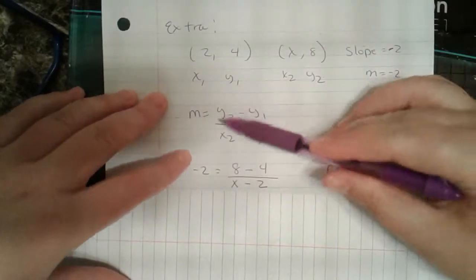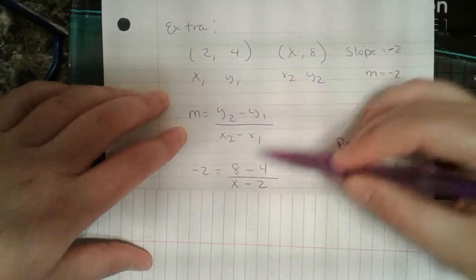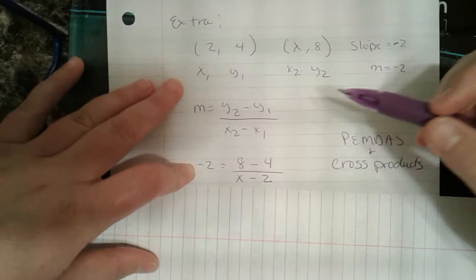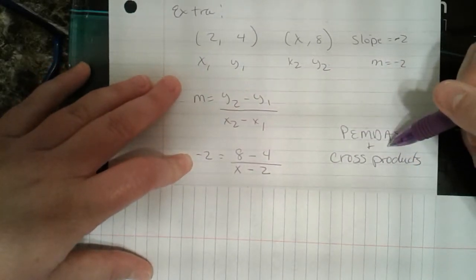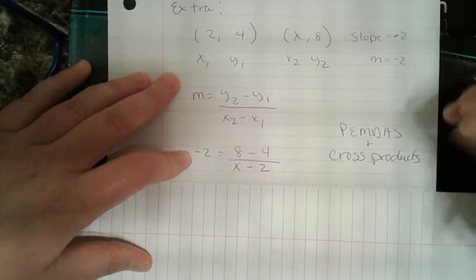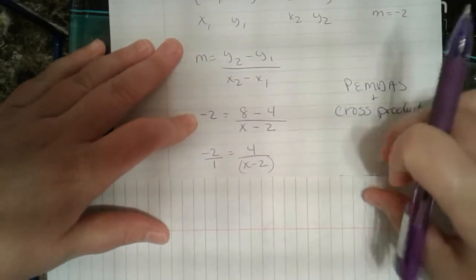So you know the formula. So you plugged everything in. That's what you should have done. You should have used PEMDAS and cross products to solve this. To me, that would be the easiest way of doing this.